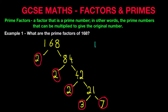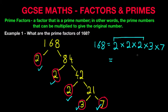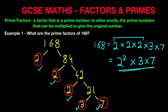Therefore, the prime factors of 168 are 2 times 2 times 2 times 3 times 7 — taking them all from the circled prime numbers. We've got three 2s, so the easy way to write this down is: the prime factors of 168 are 2 to the power of 3, times 3, times 7. And that is how you work out the prime factors.